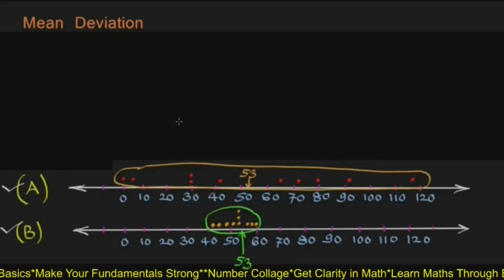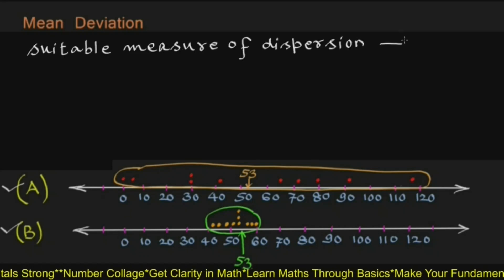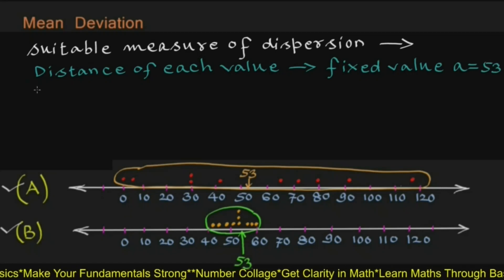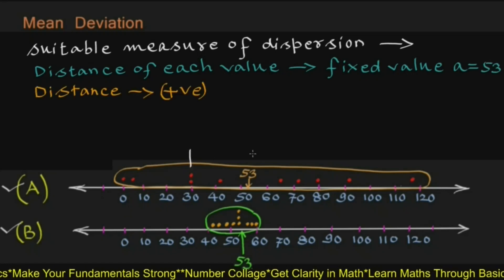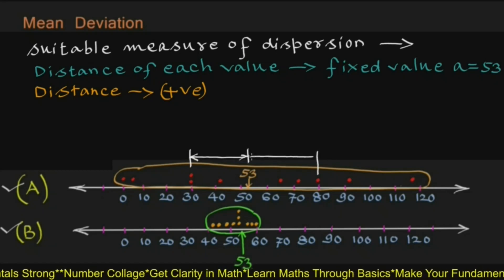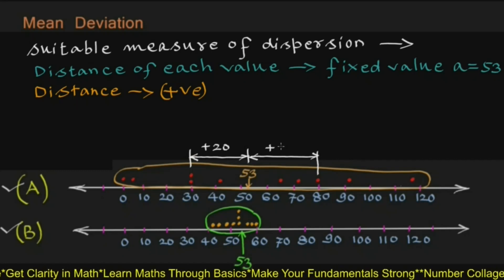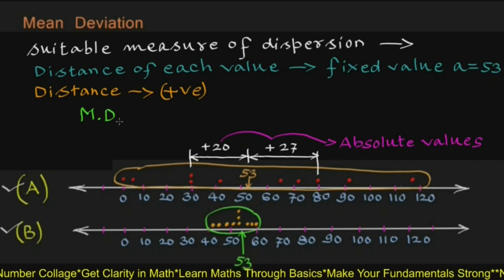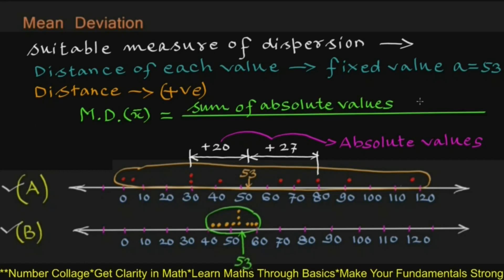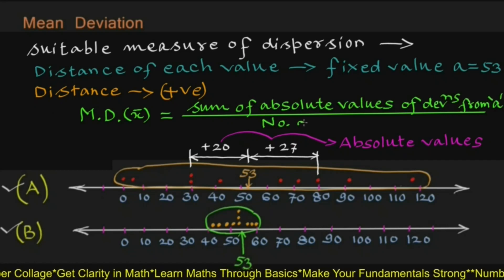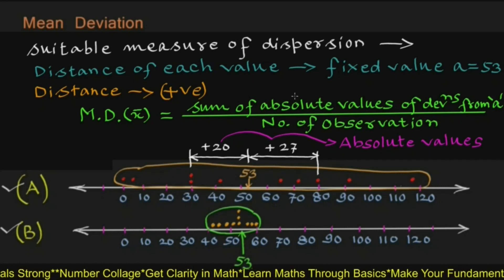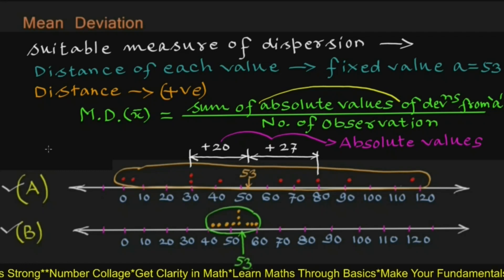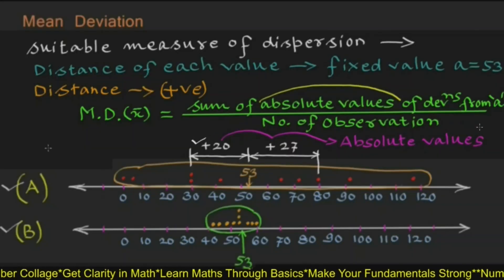The remedy is that in finding a suitable measure of dispersion, all we need is the distance of each value from a fixed value A, which in this case is 53, and the fact that distance is always positive. Whether we measure distance of 30 from 53 or of 80 from 53, both will be positive — 23 and 27 — which we call absolute values. So we write the formula for finding mean deviation: MD(x̄) equals the sum of absolute values of deviations from A upon the number of observations.